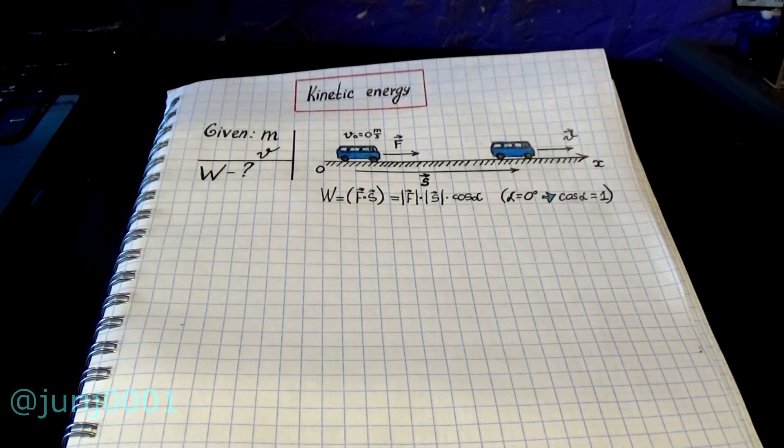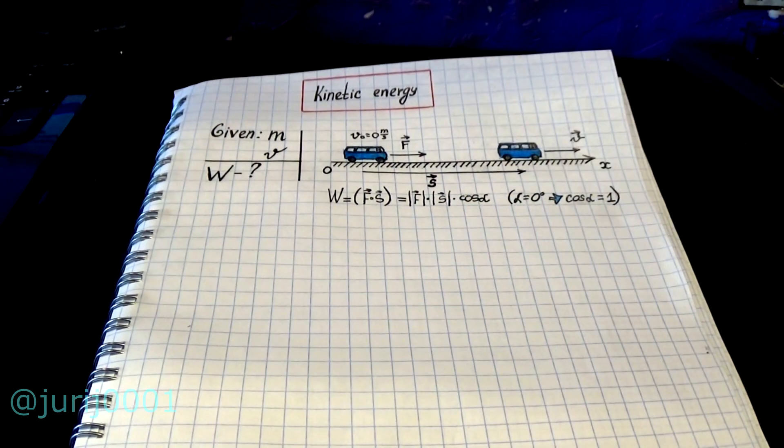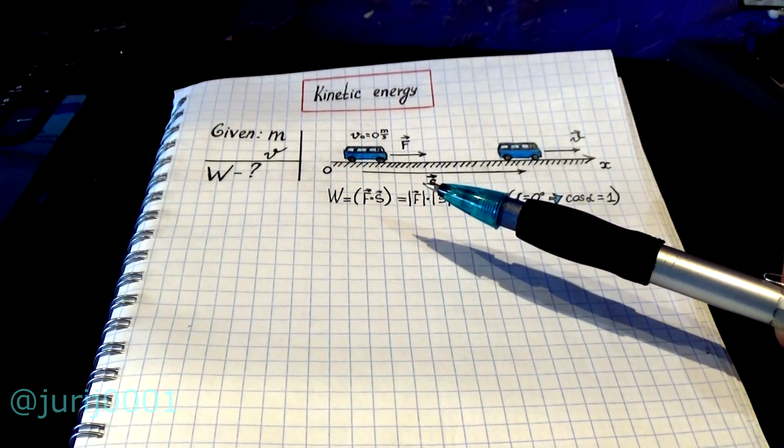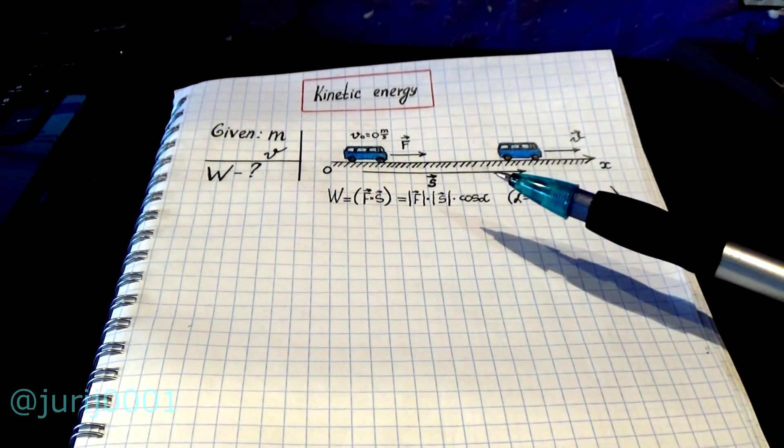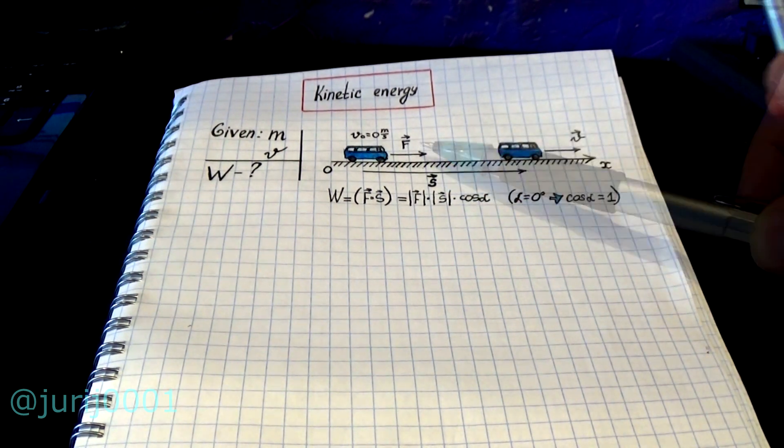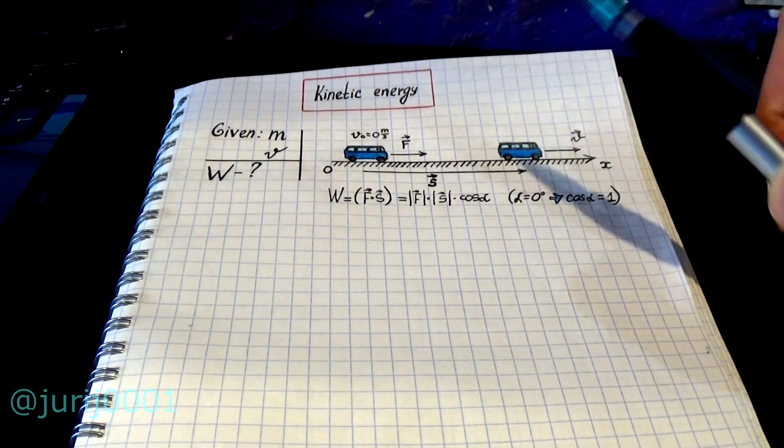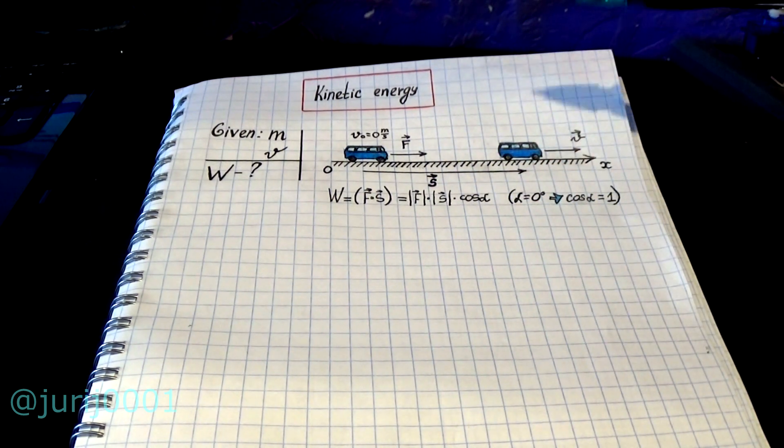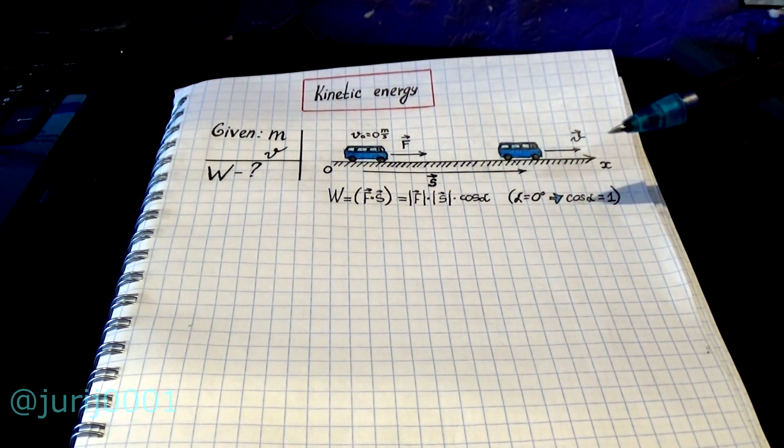I hope you know that the work is the scalar product of the force vector by the displacement vector. I have uncovered the scalar product. The force module is multiplied by the displacement module and by the cosine of the angle between the force direction and the direction of the displacement vector. Since the direction of the displacement vector and the force vector are the same, the angle between them is 0 degrees and hence the cosine of 0 is 1.